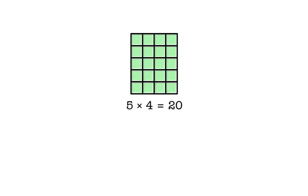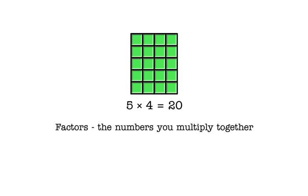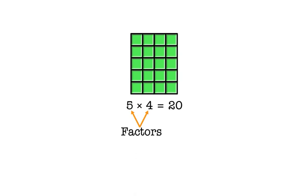5 times 4 is equal to 20. In any multiplication, we call the numbers we multiply together factors, and we call the result we get from multiplying the product. So in this case, 5 and 4 are factors and 20 is the product. In an array, the factors are always shown by the length of the sides of an array, and the product is shown by the total size of the array.